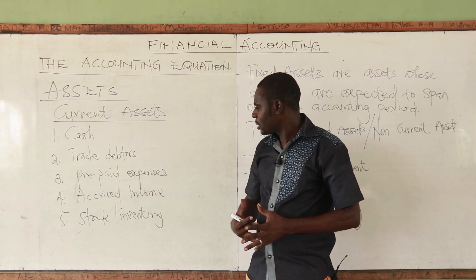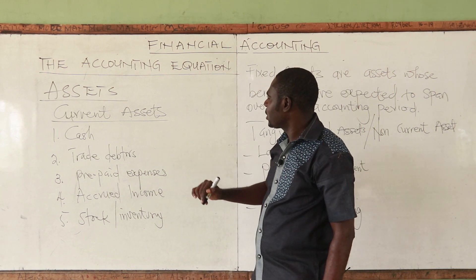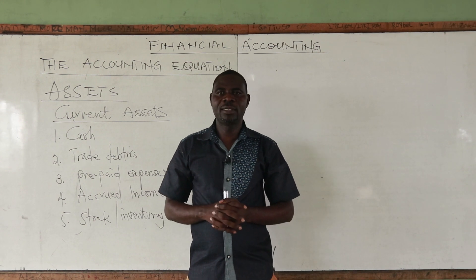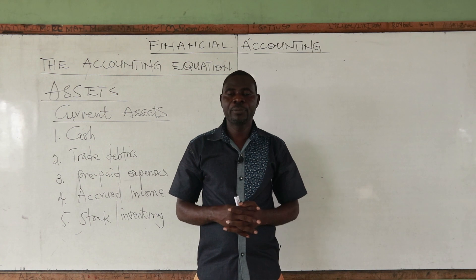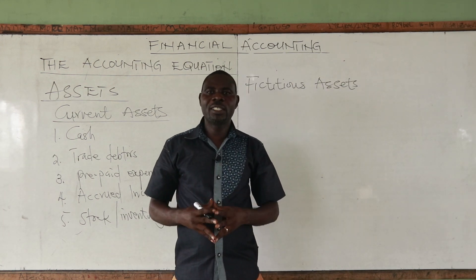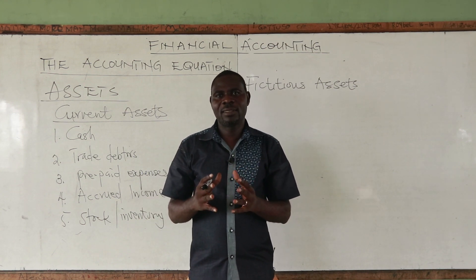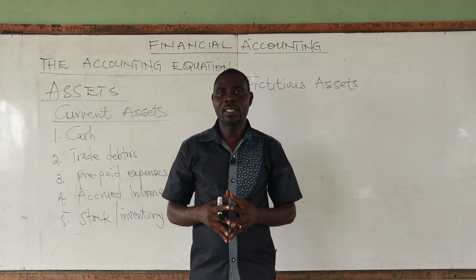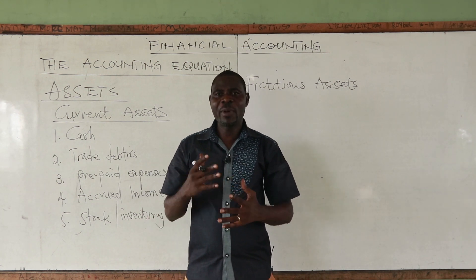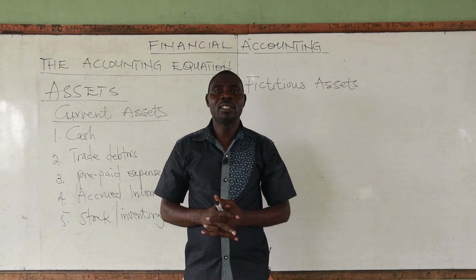This list is not exhaustive; we will look at more as we progress. We've talked about fixed assets and current assets. Let's now look at two more asset types: fictitious assets and wasting assets. Fictitious assets are debit balances that stand in the account at the end of the year. They are referred to as assets simply because they have debit balances.